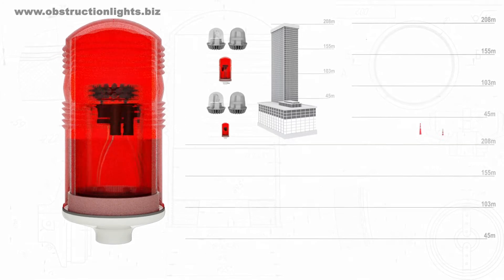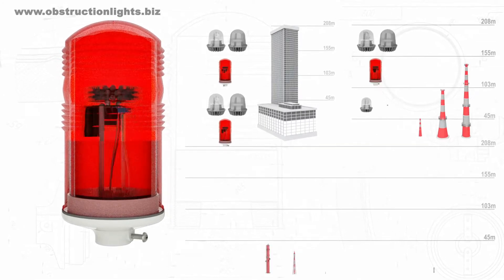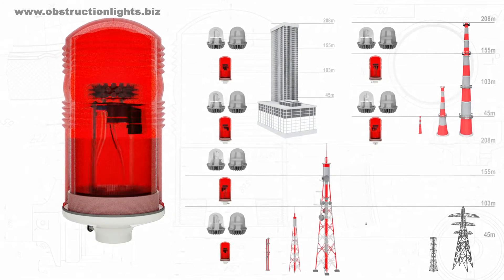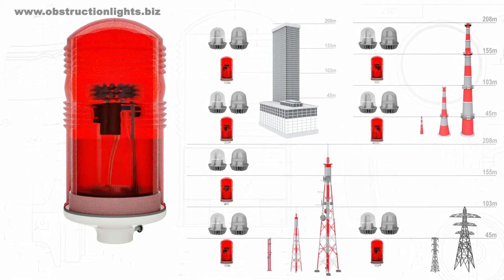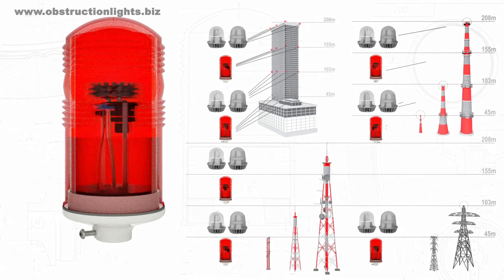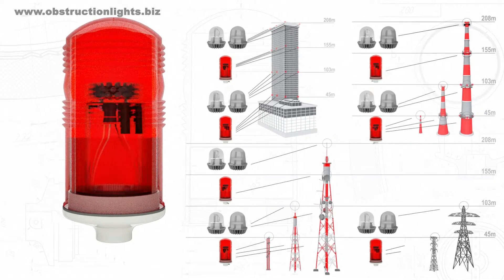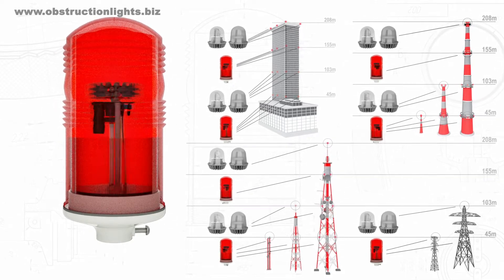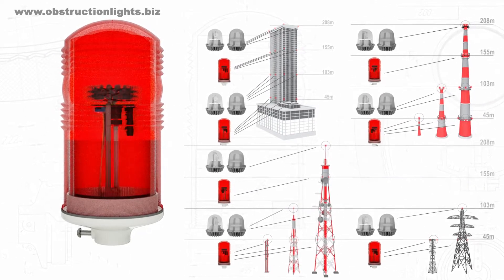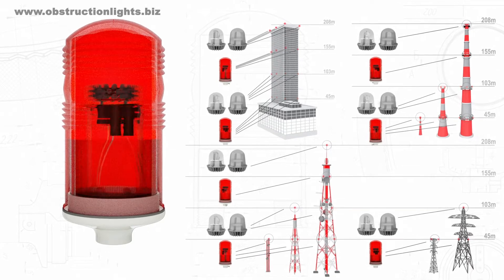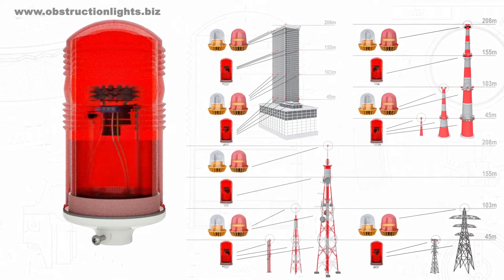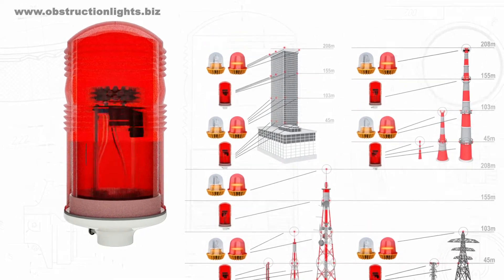According to International and Federal Aviation Regulation, ZOM48 LED Obstruction Lights are used in stacked light marking systems of buildings and constructions from 45 meters high, together with the medium intensity obstruction lights of A and B type.